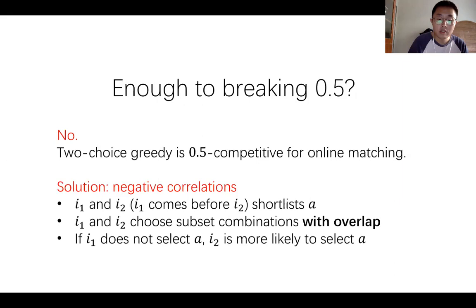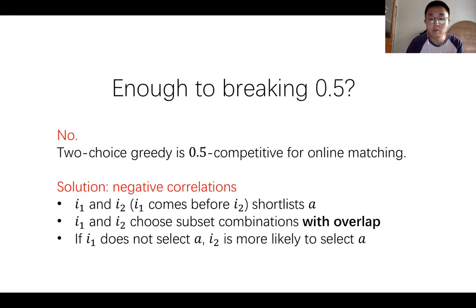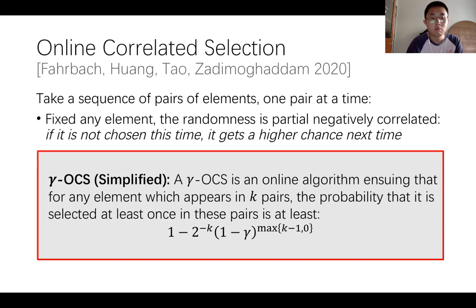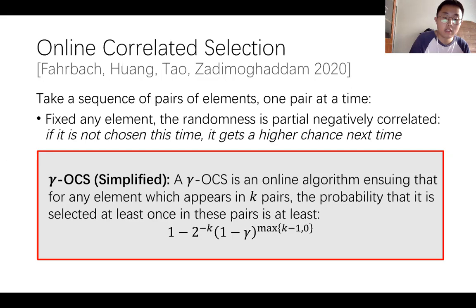Suppose that two impressions I1 and I2 both shortlist an advertiser A in a randomized round and I1 comes before I2. Further, I1 and I2 are assigned to subset combinations with overlap. The negative correlation means that if I1 does not select A, I2 is more likely to select A. This helps to get larger expected gains in the panoramic view than just using independent selections. An algorithmic ingredient called Online Correlation Selection (OCS), by Fahrbach, Huang, and Tao, and Daddy Mogdan, provides a quantitative control of such negative correlations.